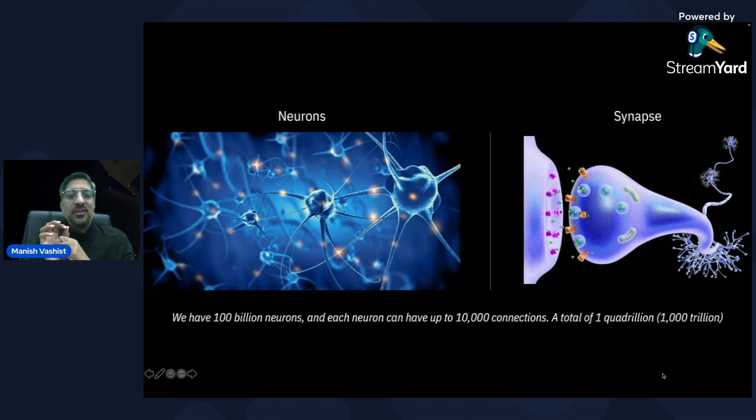You have around 10 billion neurons in your head and approximately 1 trillion connections. It is huge.